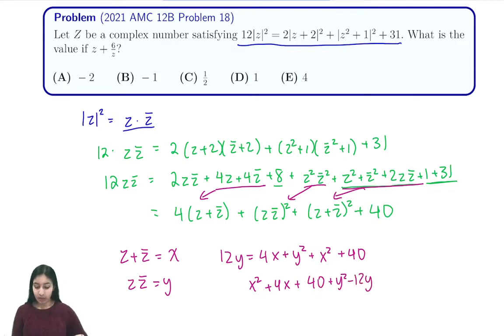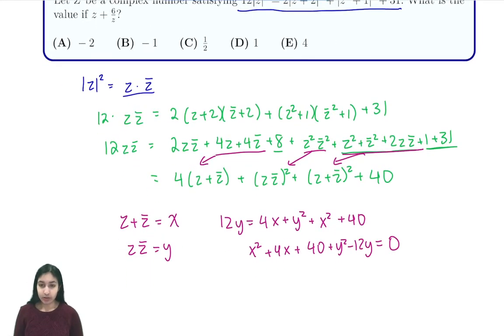So we can think about this as a quadratic of x and our discriminant in this case is going to be b squared minus 4ac, which is 4 squared, 16, minus 4 times 1 times (40 plus y squared minus 12y). So in order for our solutions to be real, and we know that x and y are real, this discriminant must be greater than or equal to zero.